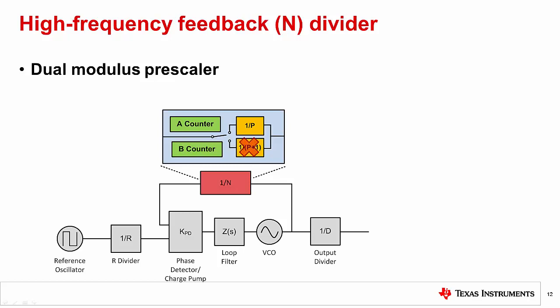After the pulse swallow circuitry is disabled, it takes B-minus-A times P VCO cycles to run the B counter to zero. The total N count is therefore N equals P times B plus A. B bigger than or equal to A is a consequence of this architecture. If this is not satisfied, then the device will reset prematurely and produce a wrong divide value.